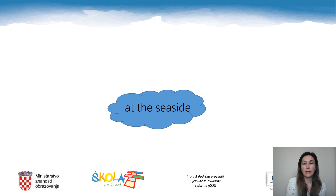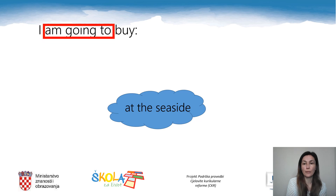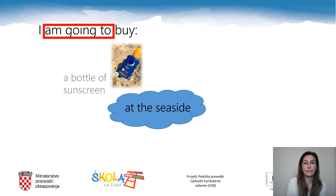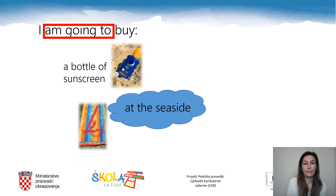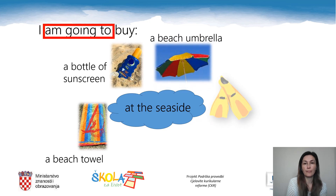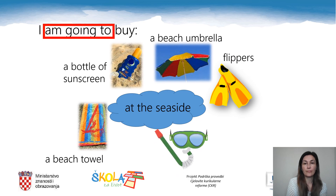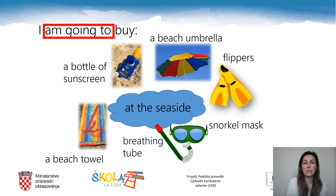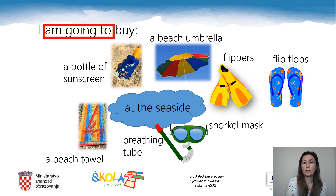If I'm going to spend my summer at the seaside, I'm going to buy the following things. Pay attention to going to future — I use it because I'm talking about my plans; I haven't arranged anything. I'm going to buy a bottle of sunscreen, a beach towel, a beach umbrella, flippers, a snorkel mask and breathing tube, and a new pair of flip-flops.